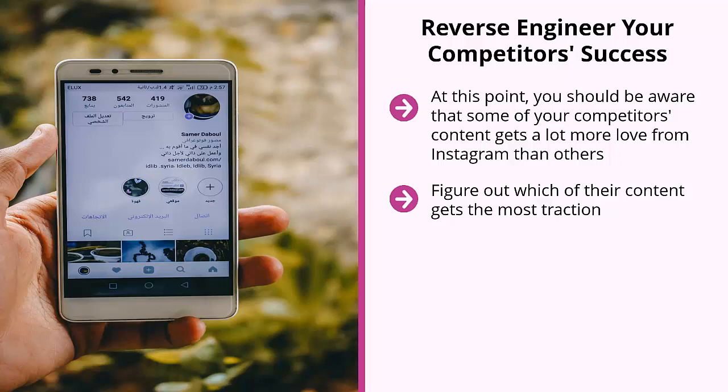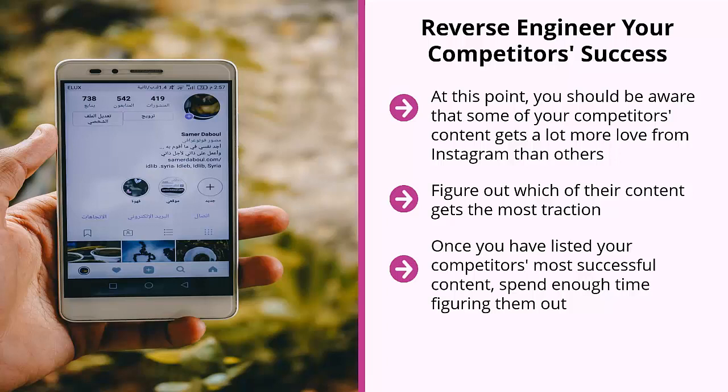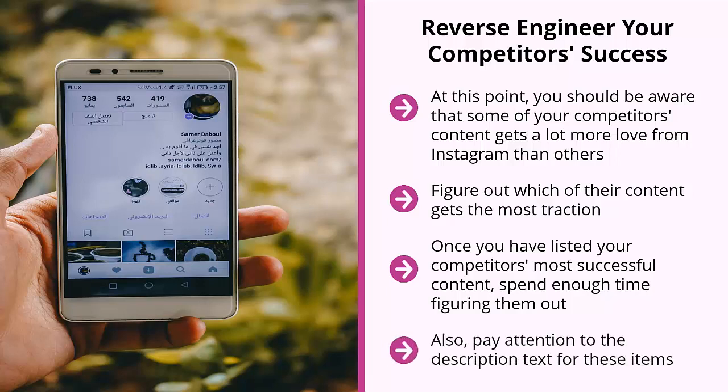Figure out which of their content gets the most traction. I'm talking about the number of likes, comments, and other indicators of popularity. Forget about everything else. Once you have listed your competitors' most successful content, spend enough time figuring them out. Pay attention to the hashtags they use and take note of the kinds of pictures or videos that are most popular.